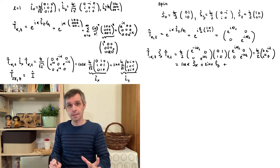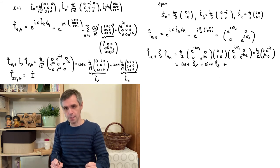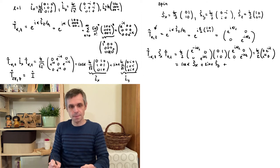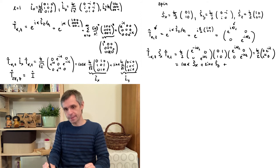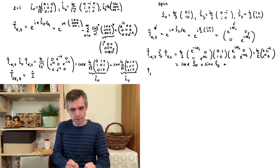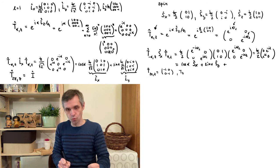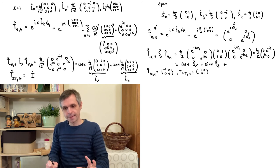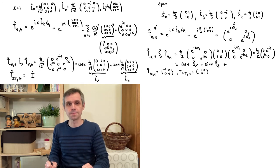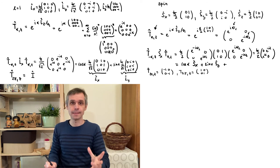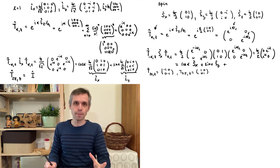However, there is still a difference between spin and angular momentum — not at the level of those equations but at the level of the operators themselves. This becomes most apparent when we set the rotation angle α to 2π. At 2π, the rotation operator for spin is not the identity matrix but the negative of the identity matrix. Only when the rotation angle is set to 4π do we recover the identity operator.